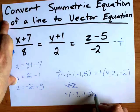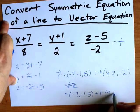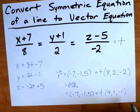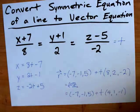8, 2, negative 2 are all divisible by 2. So I'm going to do that. I get 4 comma 1 comma negative 1. And this is another vector equation that is also allowed for this symmetric equation.